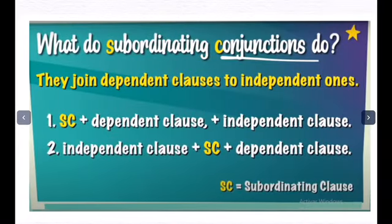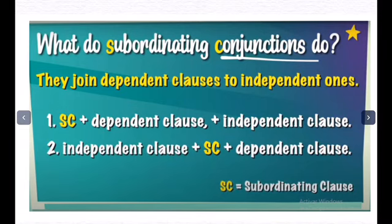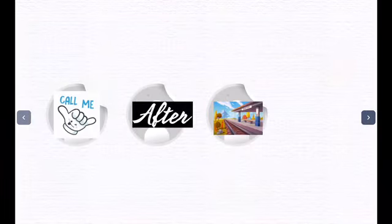In order to use subordinating conjunctions to join dependent clauses to independent ones, we are going to use two forms. Number one: put the subordinating conjunction plus the dependent clause first, add a comma, and then add the independent clause. The second form is: add the independent clause, plus the subordinating conjunction, plus the dependent clause. I will show you two examples.